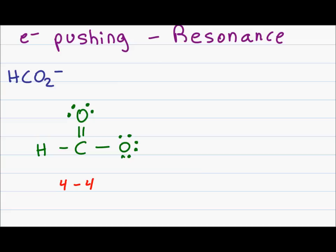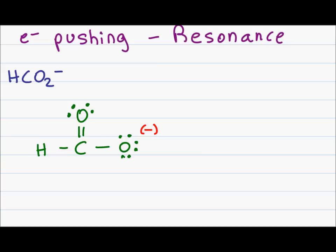Carbon should have four valence electrons, has four electrons directly attached, so the formal charge is zero. Oxygen on top should have six valence electrons, has six electrons directly attached, so the formal charge is zero. An important feature of this molecule is the carbonyl group. The carbonyl oxygen has a partial negative charge and the carbonyl carbon has a partial positive charge. This separation of charge so close to the negative oxygen is what drives the resonance effect.